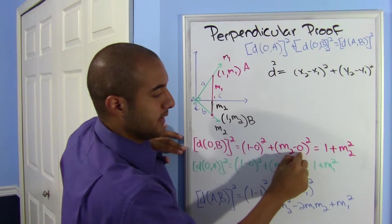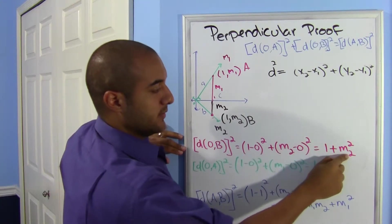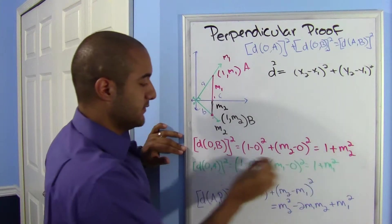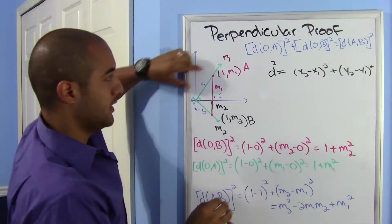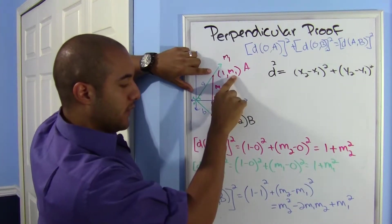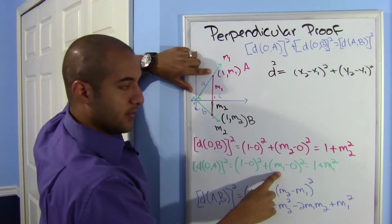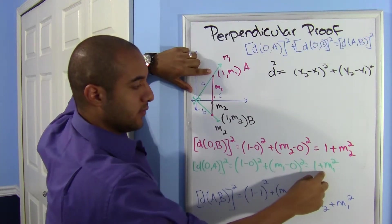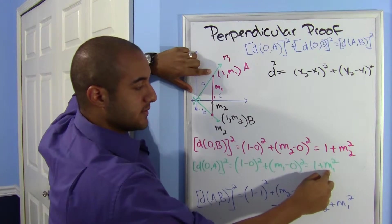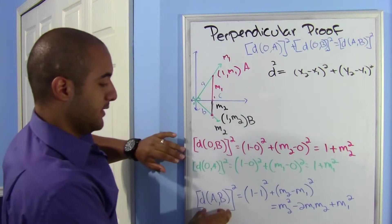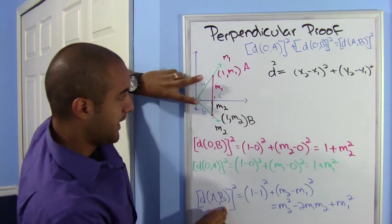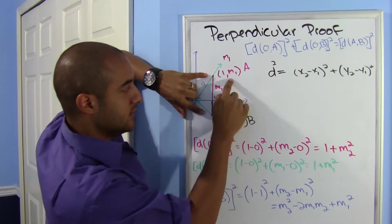1 - 0 is just 1 squared, it's just 1. And m2 - 0 is just m2, so m2 squared there. So I have the distance from the origin to B. Exact same thing for A, except this time my y was m1 over here, so I end up with 1 + m1².